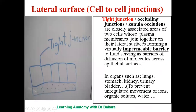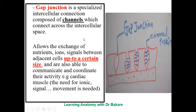Looking at the lateral surface — it presents forms of cell-to-cell junctions. The first is the tight junction, also called the occluding junction or zonula occludens. It presents a closely associated link between the epithelial cells and creates an impermeable barrier, allowing regulated movement of molecules and ions across the epithelium lining. This is seen in the stomach, the lungs, the kidney, and the urinary bladder, where there is a need for controlled movement of ions.